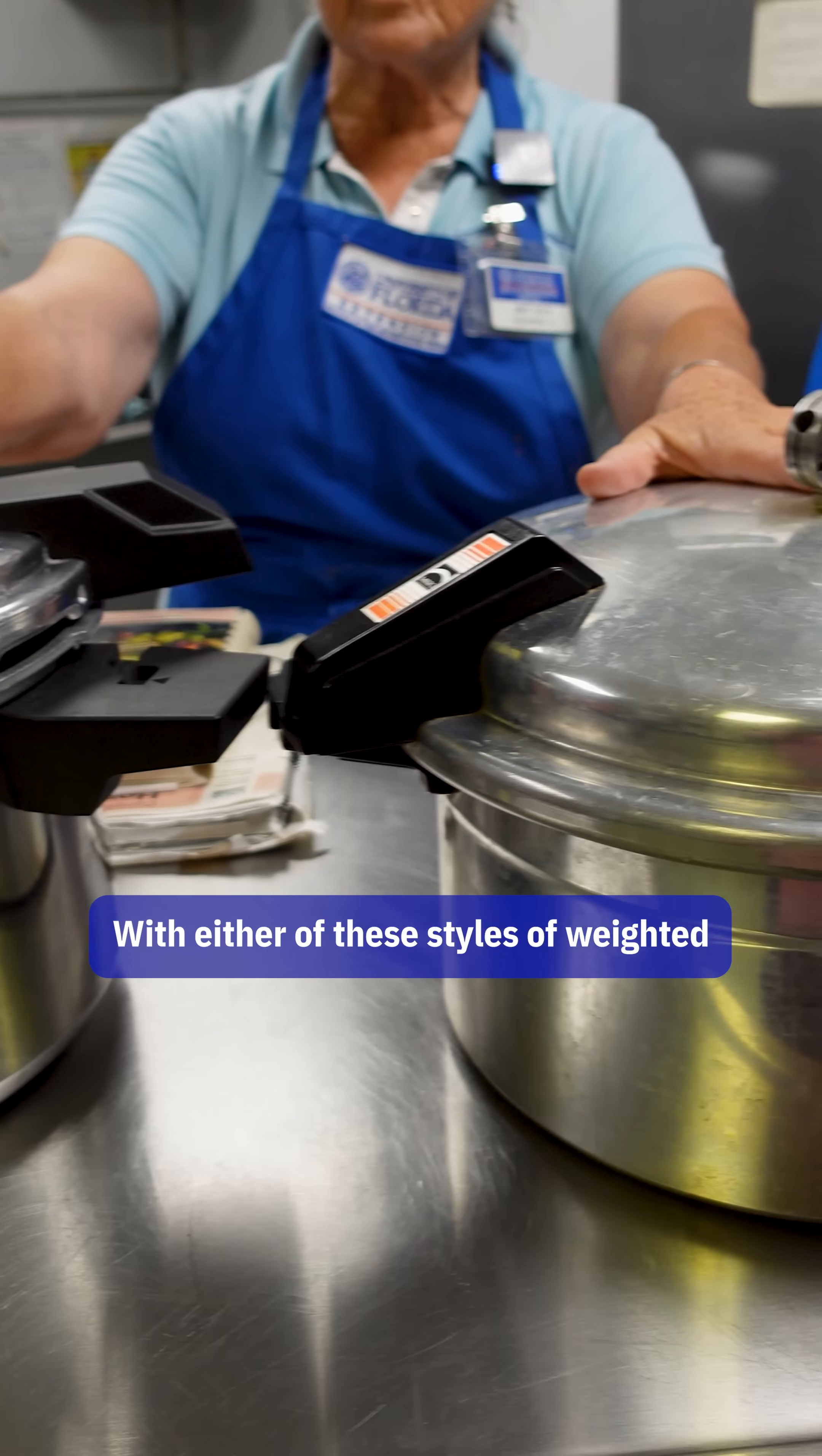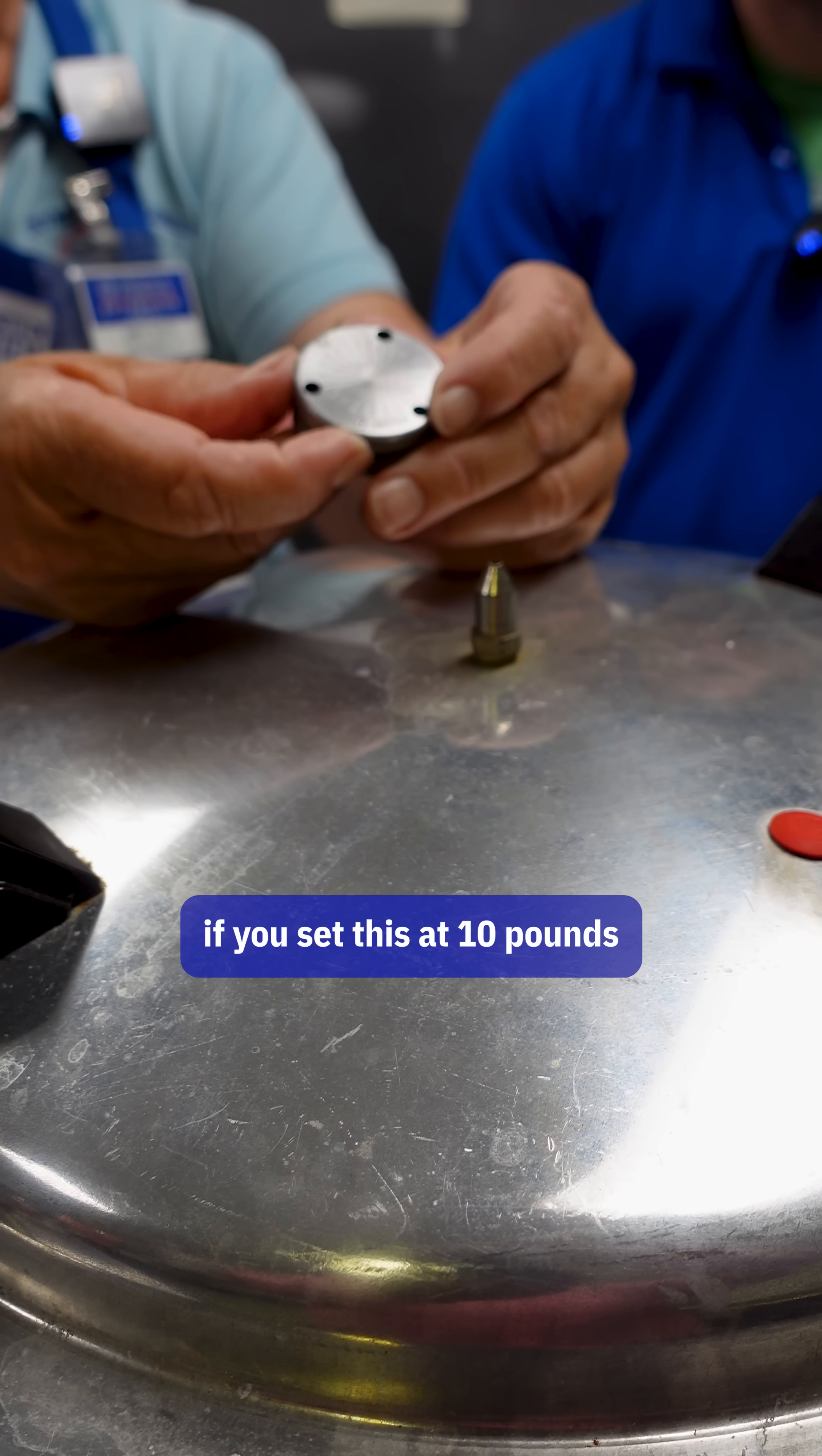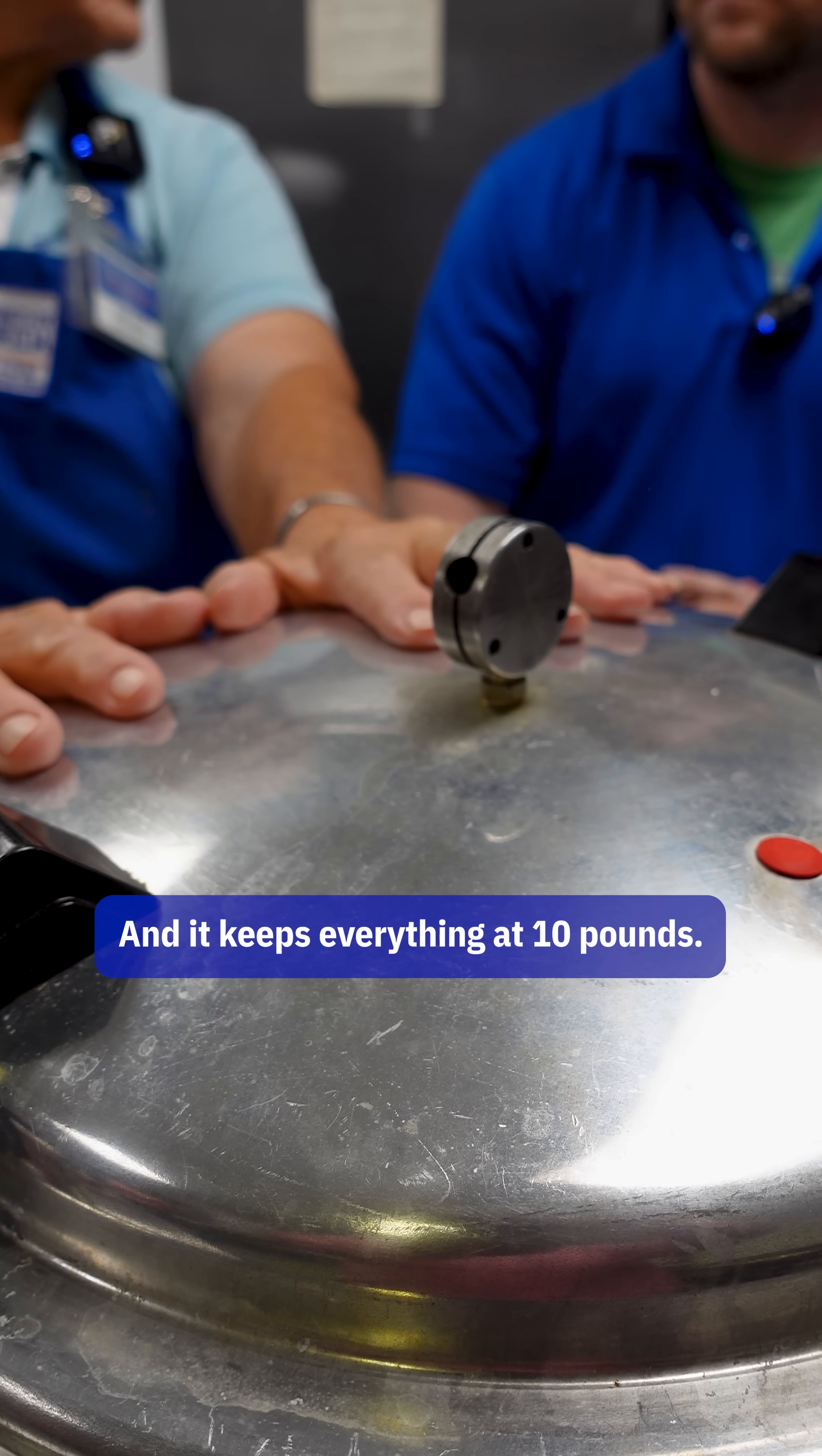With either of these styles of weighted gauges, the weights do the controlling. So with this, if you set it at 10 pounds, every time the pressure gets over 10 pounds it's going to blow off steam and keep everything at 10 pounds.